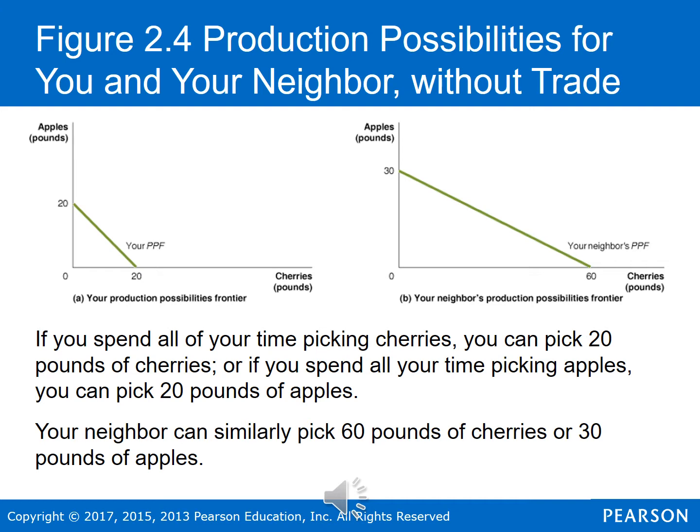Your neighbor's PPF looks different because they can pick more than you can. If they focus on apples, they pick 30 apples and zero cherries. And if they focus on cherries, they pick 60 cherries and zero apples. So they have a production possibility frontier connecting those two points.